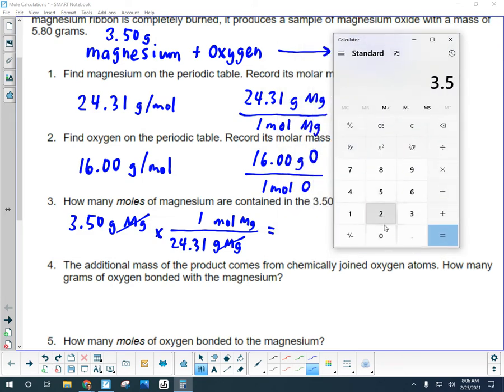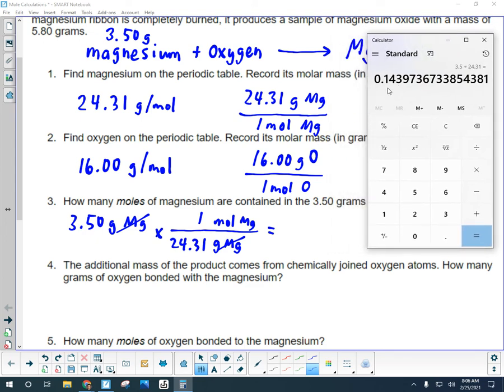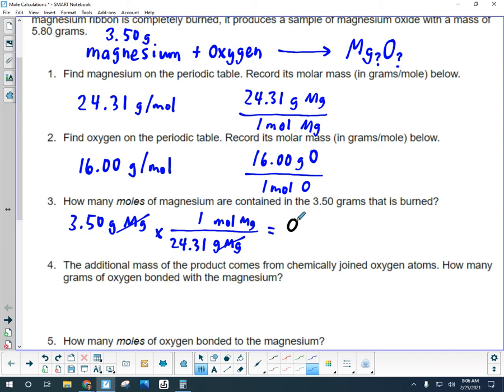So 3.50 divided by 24.31 equals not even a mole, right? We've got less than a mole here, 0.14397 with lots of other digits. I want to round it to 3 significant digits because my initial measurement has 3. So I'm not going to write 0.143, I'm going to round it to 0.144.